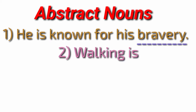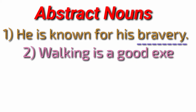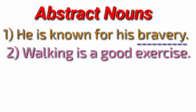Walking is a good exercise. In the given sentence there are two nouns. Walking — it is working as a subject — is also an abstract noun. And exercise is also an abstract noun.